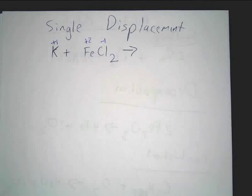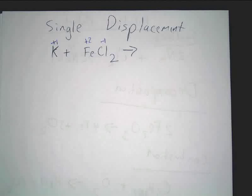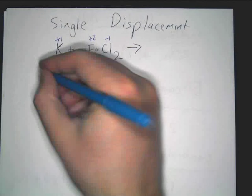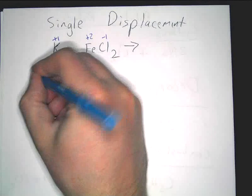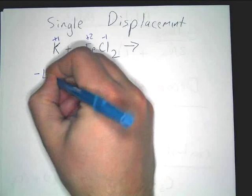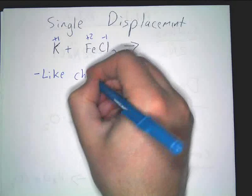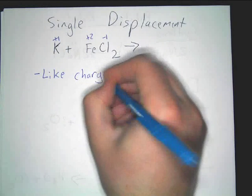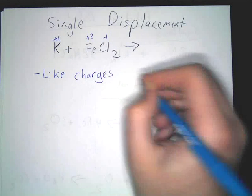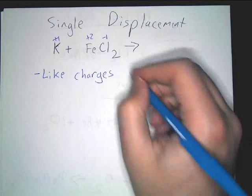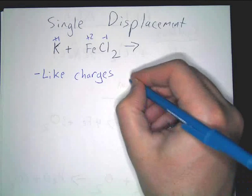Now we've identified that. Here's what we're going to do. Like charges switch places in single displacement reactions. I actually want you to write that down. Like charges — that's how you get Cl₂.